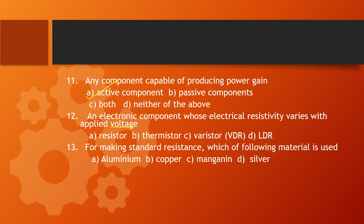Next, question number 12: An electronic component whose electrical resistivity varies with applied voltage is a varistor, also known as VDR — voltage-dependent resistor. A thermistor, by contrast, is a temperature-dependent resistor (with positive or negative temperature coefficient). An LDR is a light-dependent resistor.